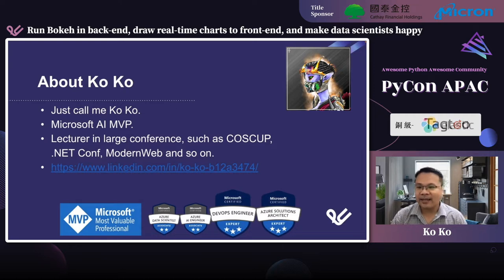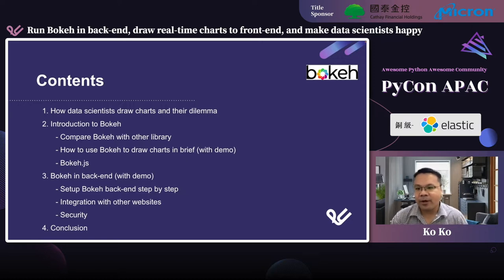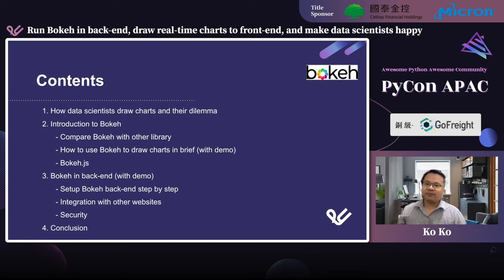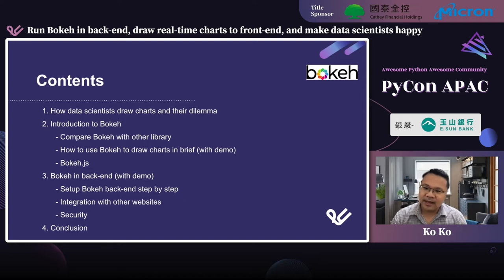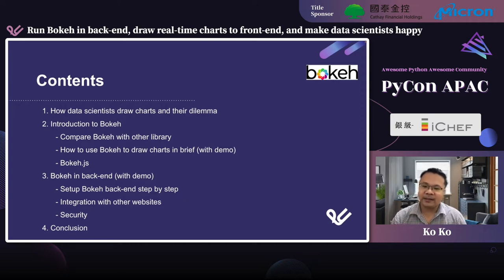Let's start our content. Here are our topics. First, I will introduce and explain the dilemma of data scientists. Second, I will introduce Bokeh, compare it with other libraries, and show you how to use Bokeh to draw charts — this is a live demo. I will also briefly introduce Bokeh.js, which is JavaScript, not Python, but it's interesting. Third is our key point — I will introduce how Bokeh runs in backend, set it up step by step, and show how to integrate Bokeh with other websites. We will also discuss security issues. The fourth section is the conclusion.